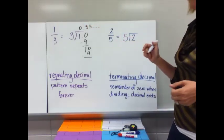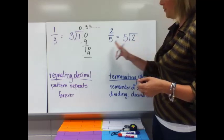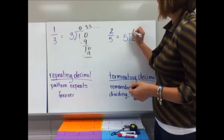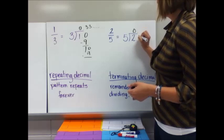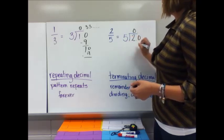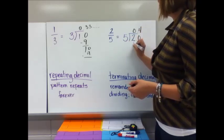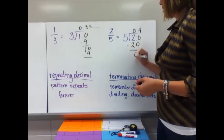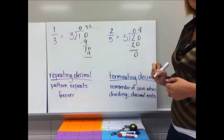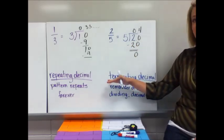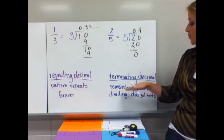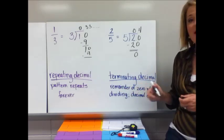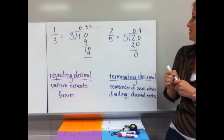Let's contrast that with two-fifths. Two goes in the division box, five is outside. Five goes into two zero times. Five goes into 20 four times. Four times five is 20. I had a remainder of zero. So that's what we call a terminating decimal — it has a remainder of zero, and when dividing, the decimal ends.